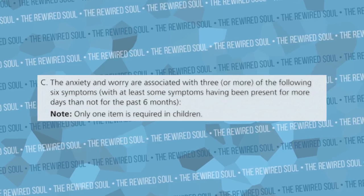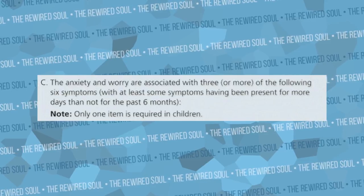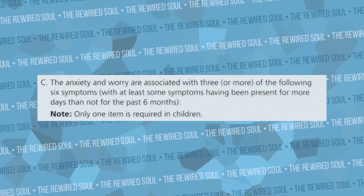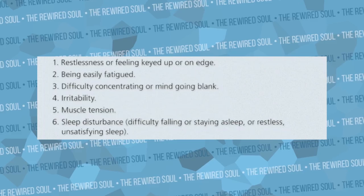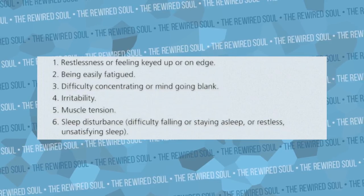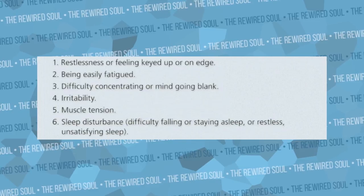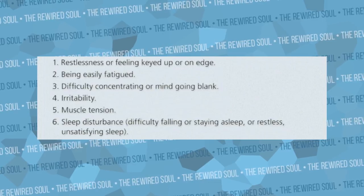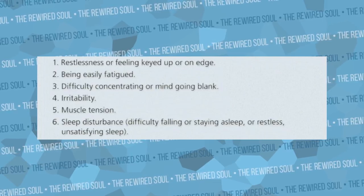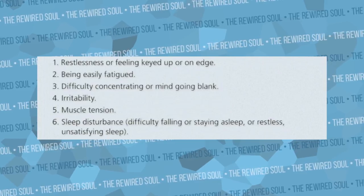Symptom number three: the anxiety and worry are associated with three or more of the following six symptoms, with at least some symptoms having been present for more days than not for the last six months. The six symptoms in this category are: one, restlessness or feeling keyed up or on edge; two, being easily fatigued; three, difficulty concentrating or mind going blank; four, irritability; five, muscle tension; six, sleep disturbance — difficulty falling or staying asleep, restlessness, or unsatisfying sleep.